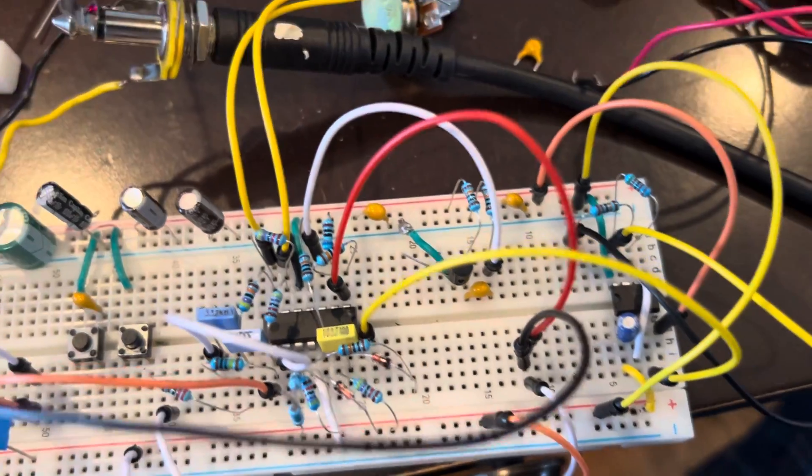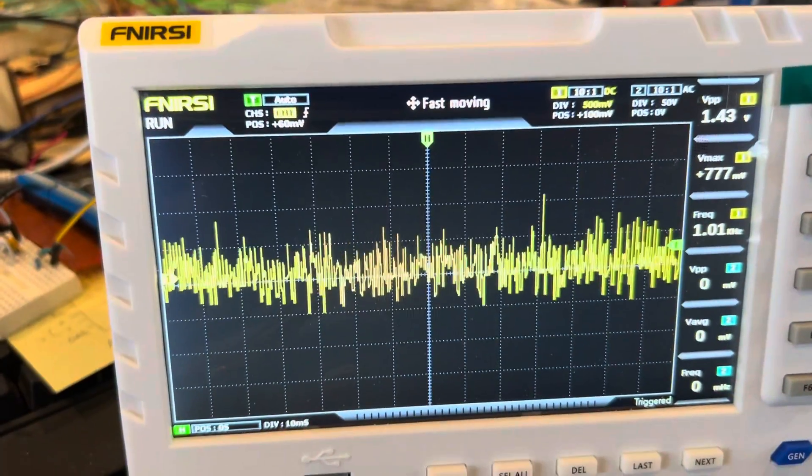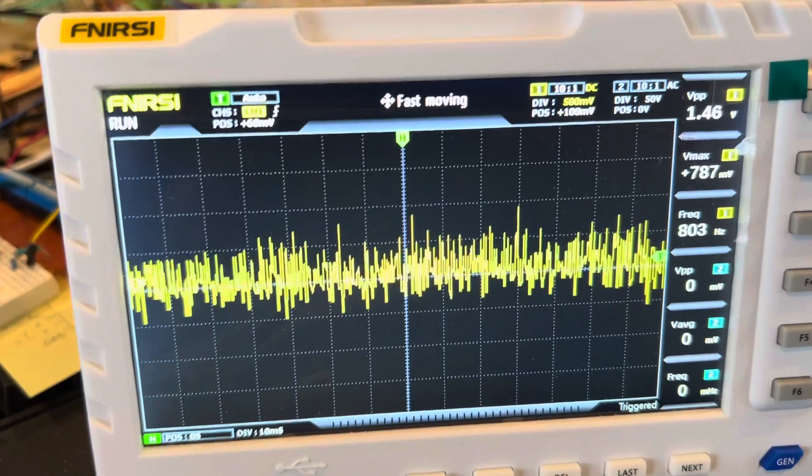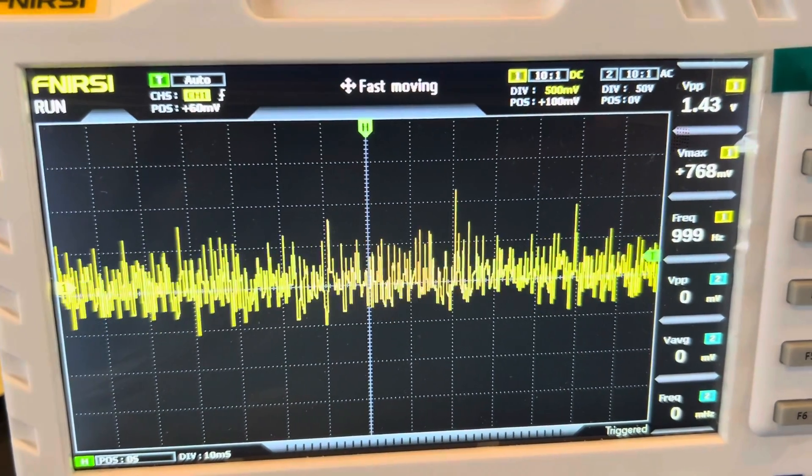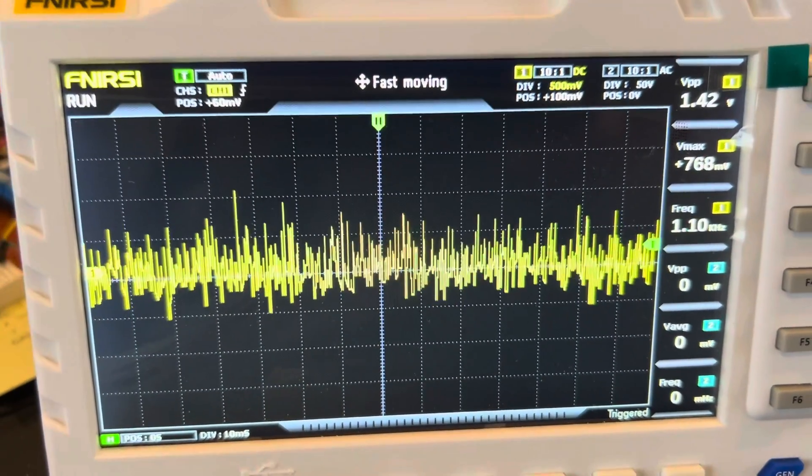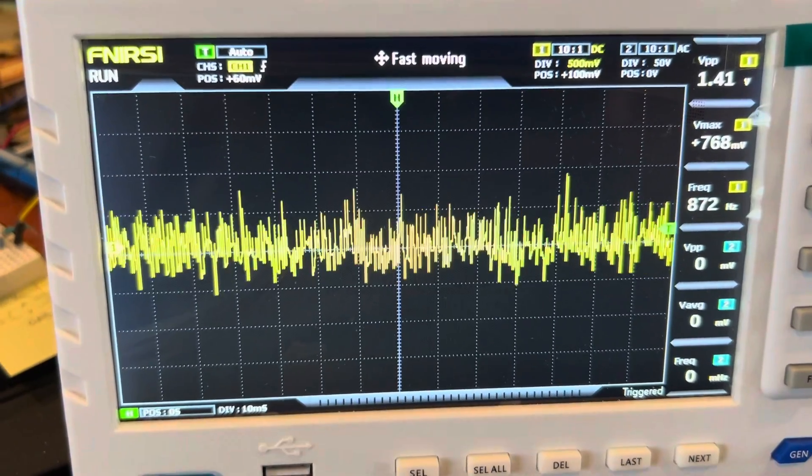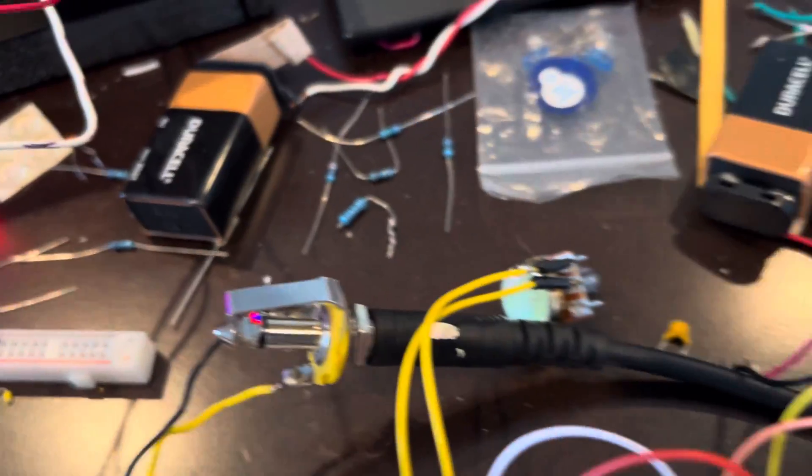The oscilloscope is showing white noise, and that's white noise at 1.4 volts peak to peak, which is plenty loud enough after the op-amp. That is going out through this output jack.